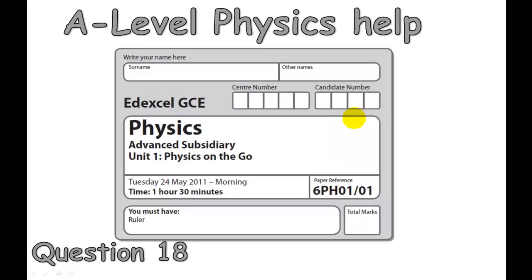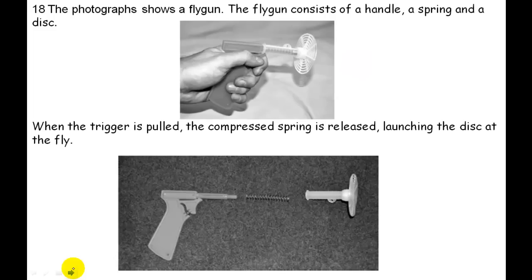Welcome to the presentation explaining how to answer question 18 from the May 2011 A-level physics paper. The question is about a fly gun that has a spring in it that can be compressed and used to fire a projectile which is supposed to swat and kill a fly.